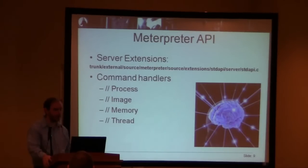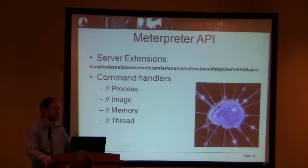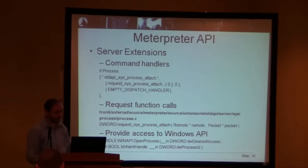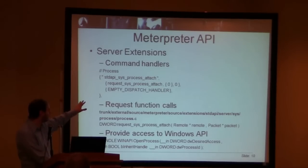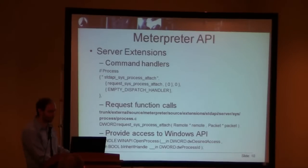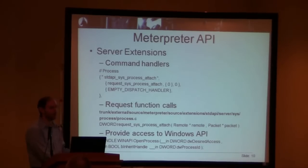The bread and butter of the Meterpreter API is server extensions. They exist at this really long path, and you basically have command handlers which define what kind of activities you can do. The big ones we're going to care about for this talk are process, image, memory, and thread — the basic building blocks inside the Windows environment for accessing data that might be interesting to us. I want to make people aware of these file locations because if you spend some time looking through them, that's how you find out what Meterpreter is capable of doing.